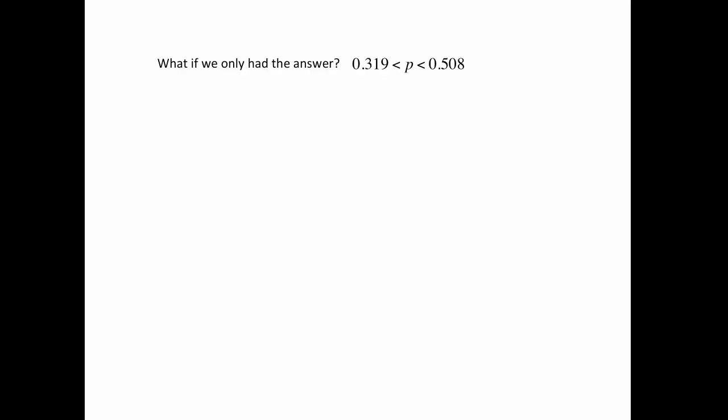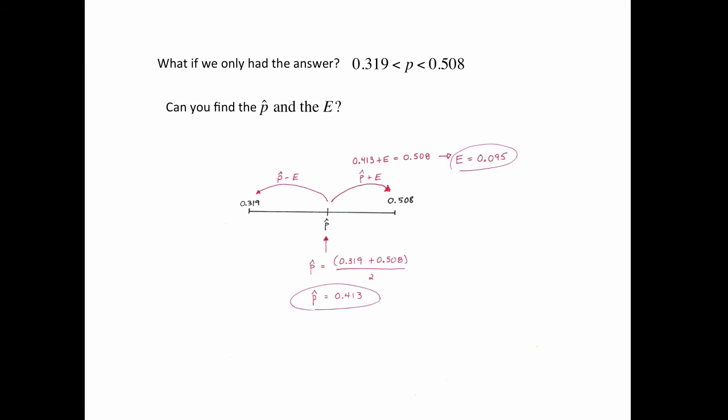Alright, one last thing. What if you only had this answer? Could you find out what the p hat and what the E is? So look at this fancy artwork. The idea is that the p hat is in the middle. You would then add the error to find this number on the right. You would subtract the error to get this number on the left, but this is in the exact middle. If it's in the exact middle, all you have to do is average those two numbers, and you would get the p hat equals 0.413, which I remember from the other page is true. Now, what about the E? Well, like I said, it's supposed to be you take p hat, add the error, you get to this side, p hat minus the error, you get to this side. That means I could plug in p hat right here, say plus e, and then it would have to equal this 0.508. Then just subtract 0.413 from both sides, and you would find the error 0.095.